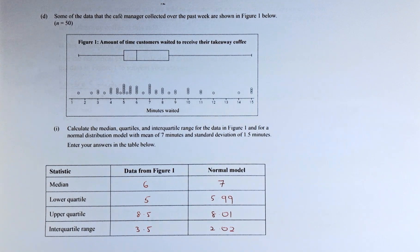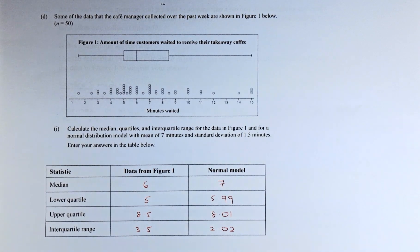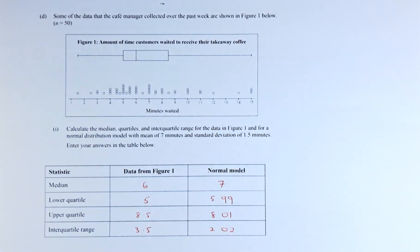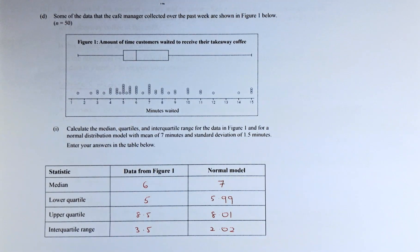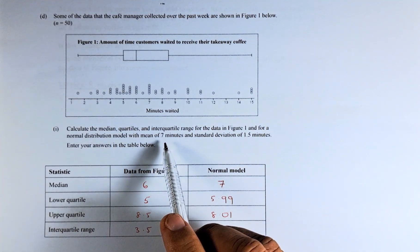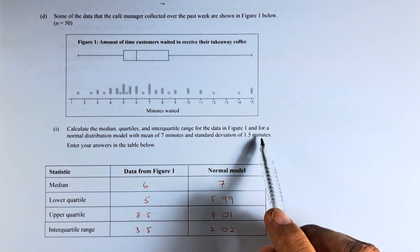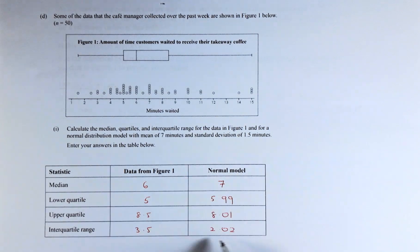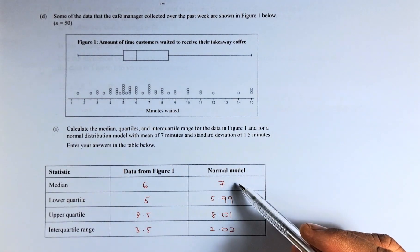Some of the data that Cafe Method collected over the past week are shown in Figure 1. Calculate the median, quartiles, and interquartile range for the data in Figure 1 for a normal distribution model of 7 minutes and standard deviation of 1.5. The normal distribution is found from the previous examples. The median is 7.